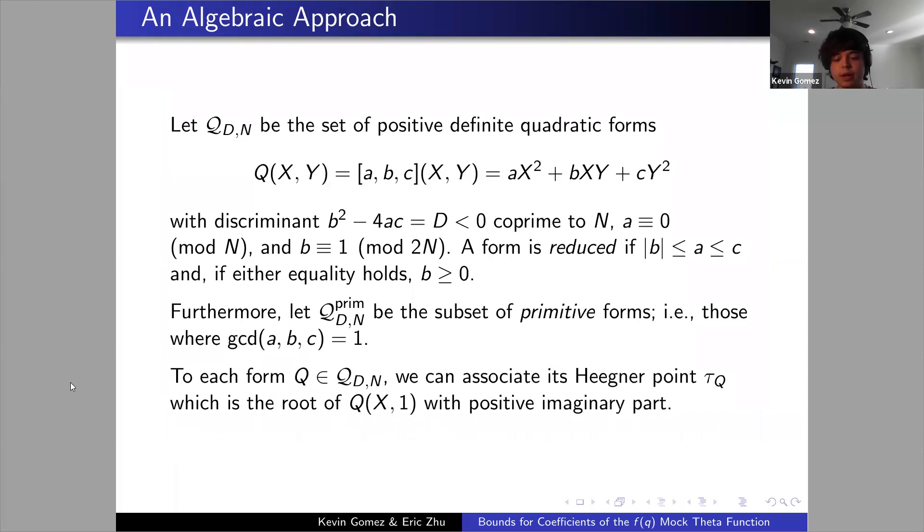How do we do our approach? We're taking a more algebraic approach to this problem. If we let Q_D,n be a set of positive definite quadratic forms for a, b, and c integers, we have some restrictions on the residues of a and b mod n. A form is reduced if absolute value b is less than a less than c, and we can call a form primitive if the greatest common divisor of all those coefficients is 1. These sets will become very important later. To each of these forms we associate a Heegner point, which is simply a root of Q(x,1) with positive imaginary part, so in the upper half plane.